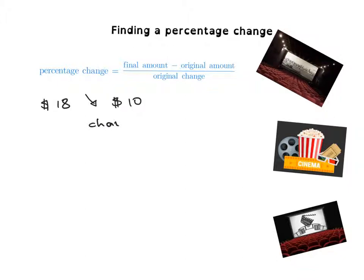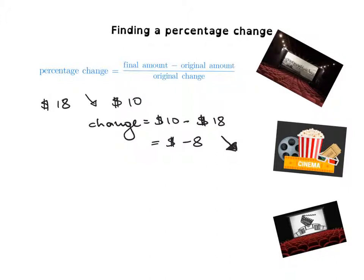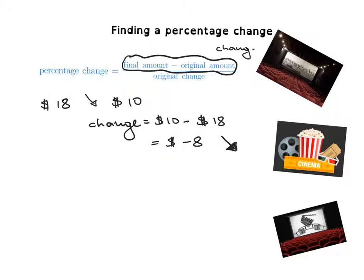If I write the change, it's the final amount — which is $10 — take away the amount it was before, which is $18. That gives negative $8, which means the price has decreased. So: change = final amount minus original amount. In this case the change is negative $8, so the price has gone down.